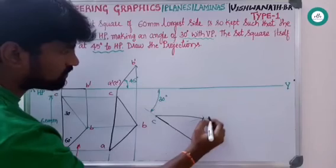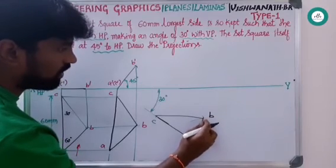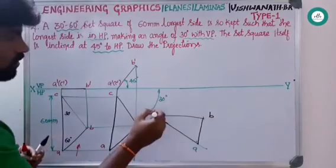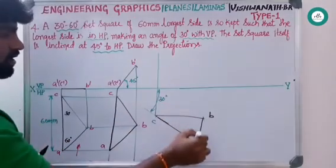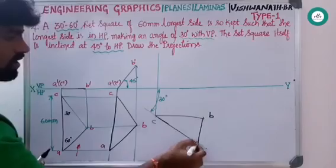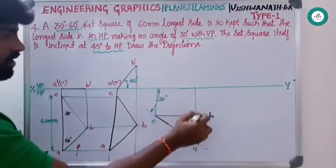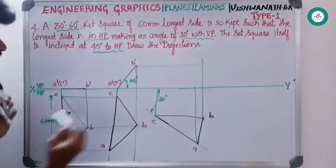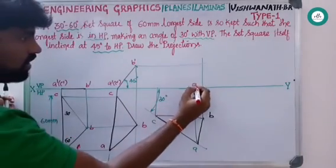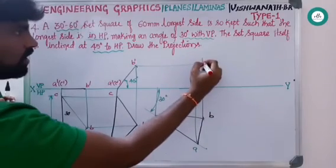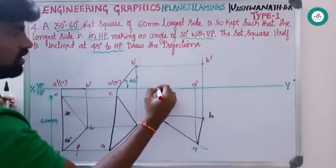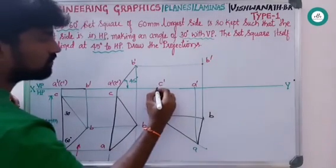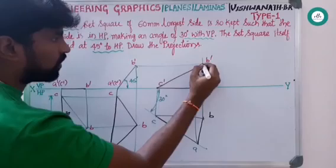This is A, B, C. You can erase the construction lines. Next, from all the points you project here. We know that the resting edge always falls on the XY line — you can directly stop here. Next, this point B meets somewhere here. Naming: this is A dash, this is B dash, and this is C dash. Joining all the points completes the problem.